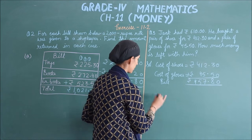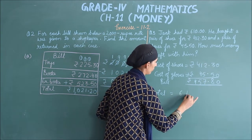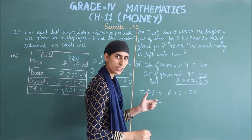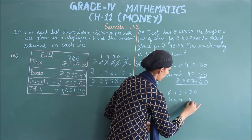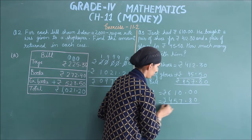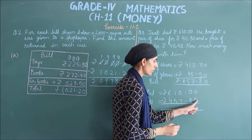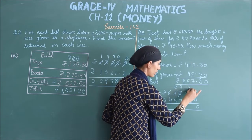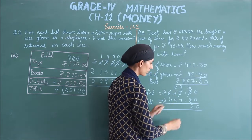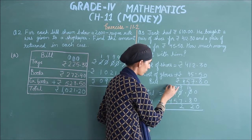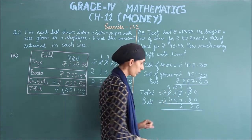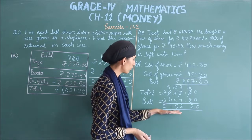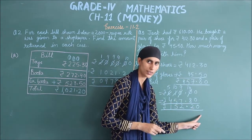Subtract the bill ₹457.80 from ₹610.00 to find the remaining amount. 0 minus 0 is 0. Next, borrow: it becomes 0, then 9, then 10. 10 minus 8 is 2; 9 minus 7 is 2. Next can't subtract — borrow again: becomes 5 and 10. 10 minus 5 is 5; 5 minus 4 is 1. So Jack has ₹152.20 left.